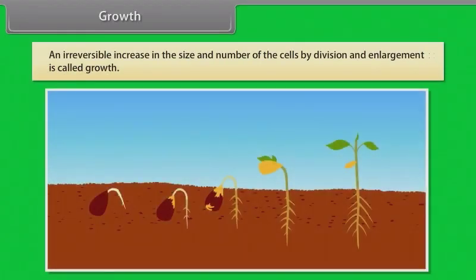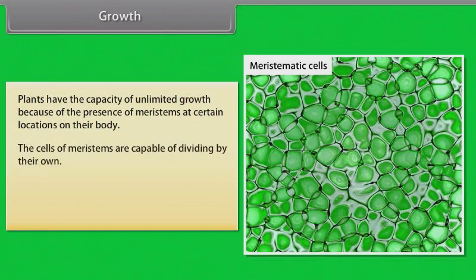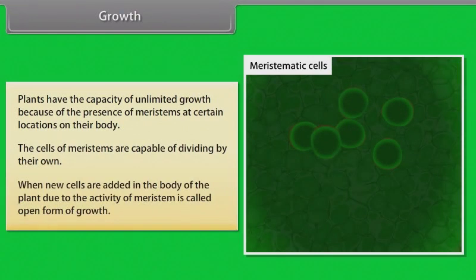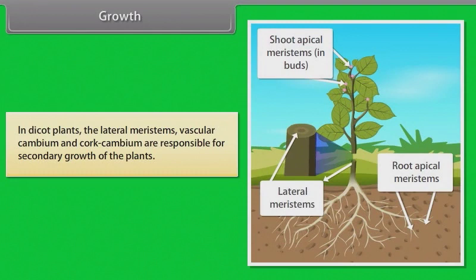An irreversible increase in the size and number of cells by division and enlargement is called growth. In plants, the growth generally is indeterminate. Plants have the capacity of unlimited growth because of the presence of meristems at certain locations on their body. The cells of meristems are capable of dividing by their own. When new cells are added in the body of the plant due to the activity of meristem, it is called open form of growth. The root apical meristem and shoot apical meristem are primarily responsible for the elongation of the plant along its axis. In dicot plants, the lateral meristems, vascular cambium and cork cambium are responsible for secondary growth of the plants.